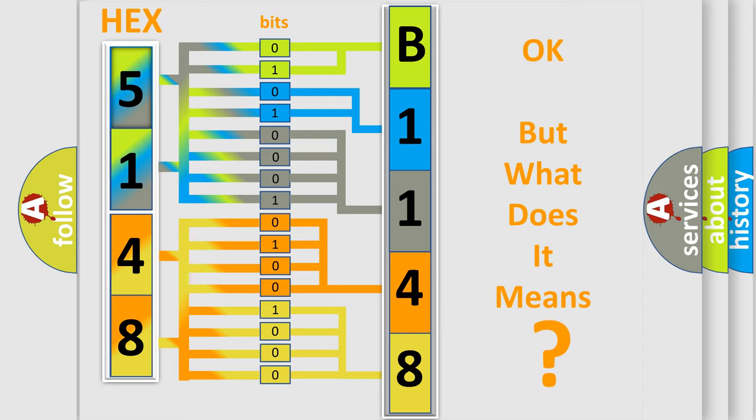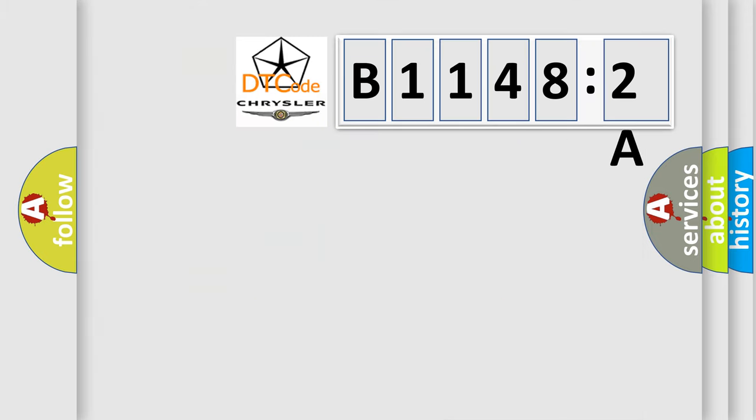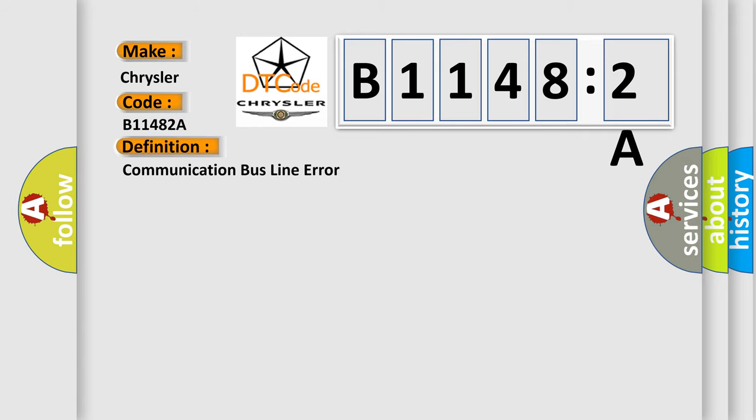And now this is a short description of this DTC code. Signal stuck in range. This subtype is used for failures where the value of the signal is in the normal operating range, but not correct for current operating conditions.